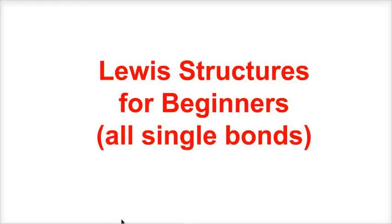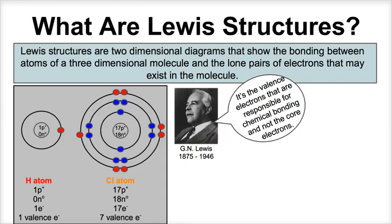Hey guys, this is Mr. Millings and today we're going to learn how to draw beginning level Lewis structures. Lewis structures are two-dimensional diagrams that show the bonding between atoms of three-dimensional molecules and the lone pairs of electrons that may exist in the molecule.